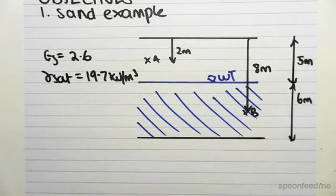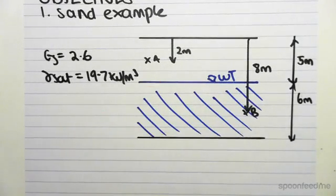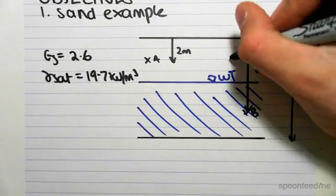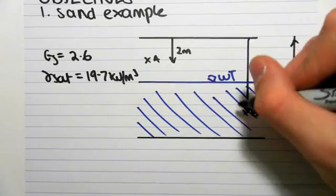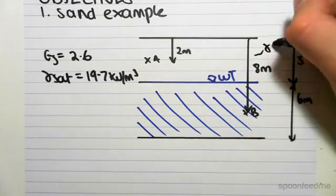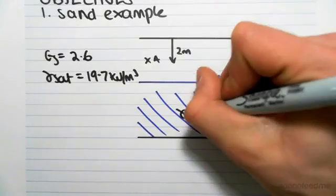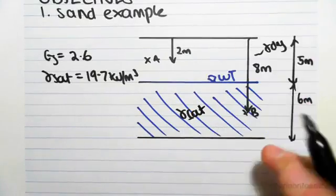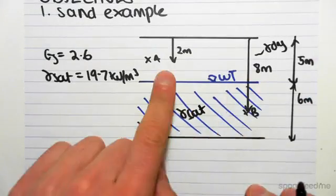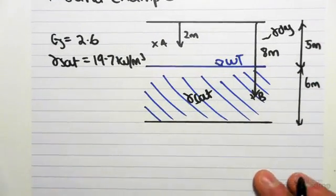So let's do point A first. Because this region is all dry and this region is all saturated, this is gamma dry and this region is gamma sat. So we first have to find gamma dry because we're only given gamma sat.